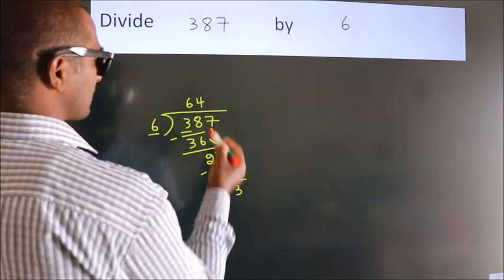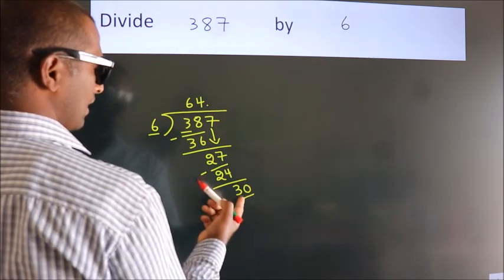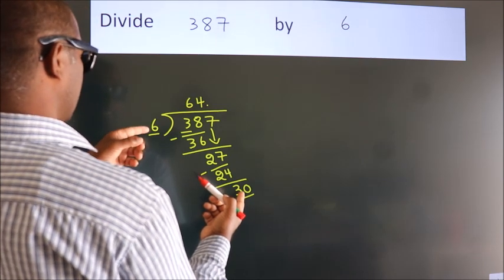So what we do is, we put a dot and take 0. So, 30. When do we get 30 in the sixth table?